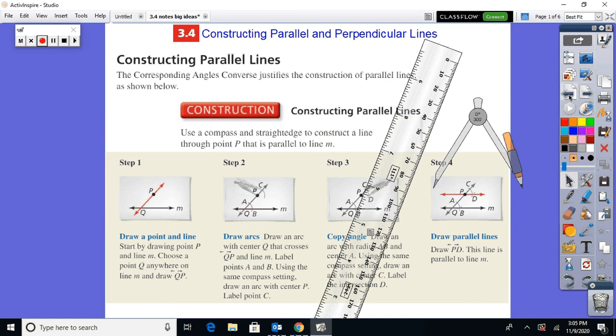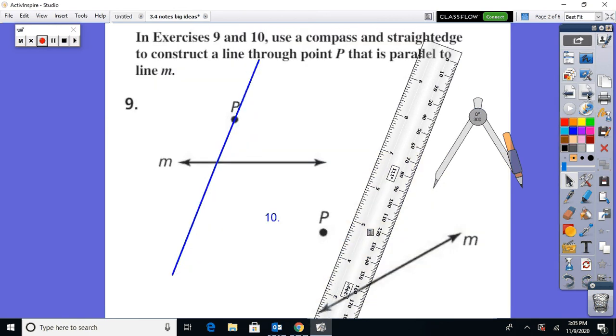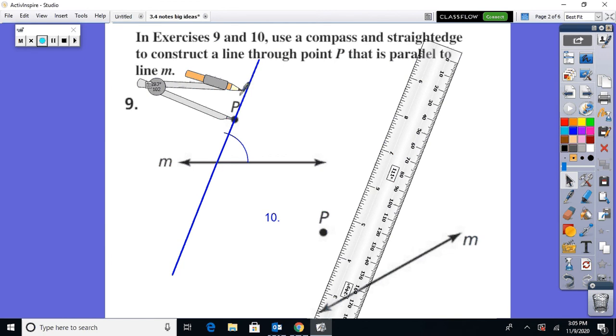Now, that was step one. Draw a point in line. So now step two. Draw an arc with the center. So let's go ahead and do that. From the intersection here, we want to bring our compass in. Draw an arc. Keep the compass setting the same. Come up to P. Draw the same arc.